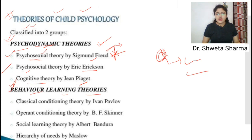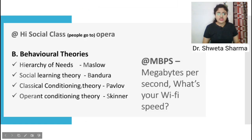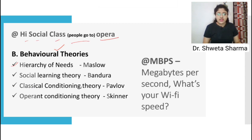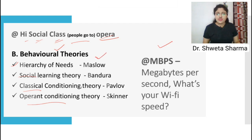The second group is behavior learning theories. Under behavior learning there are: classical conditioning, operant conditioning, social learning, and hierarchy of needs. A mnemonic to remember behavioral theories: 'Social CLass People Go TO OPEra.' Social = social learning theory, Class = classical conditioning, Opera = operant conditioning, and hierarchy of needs.